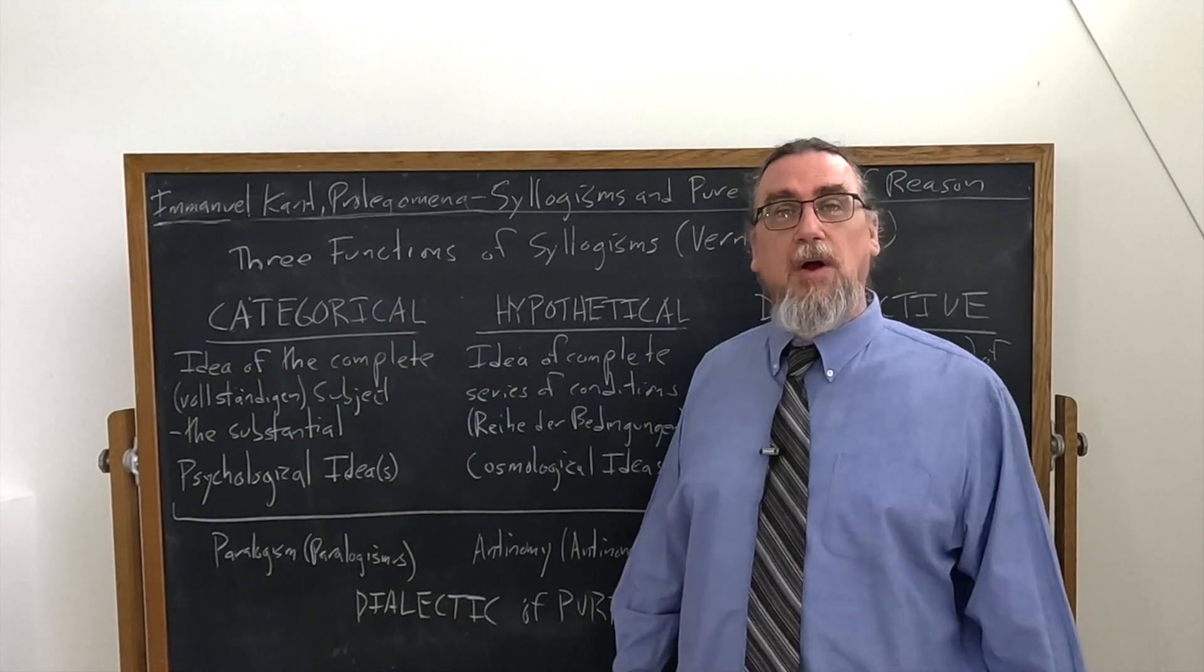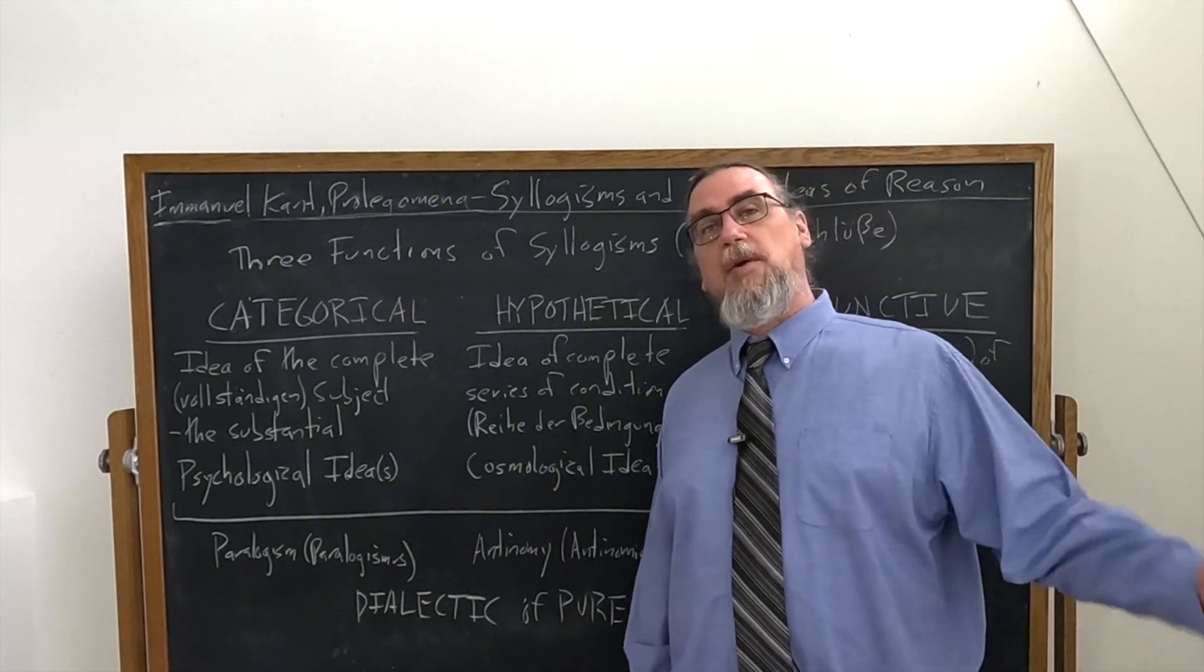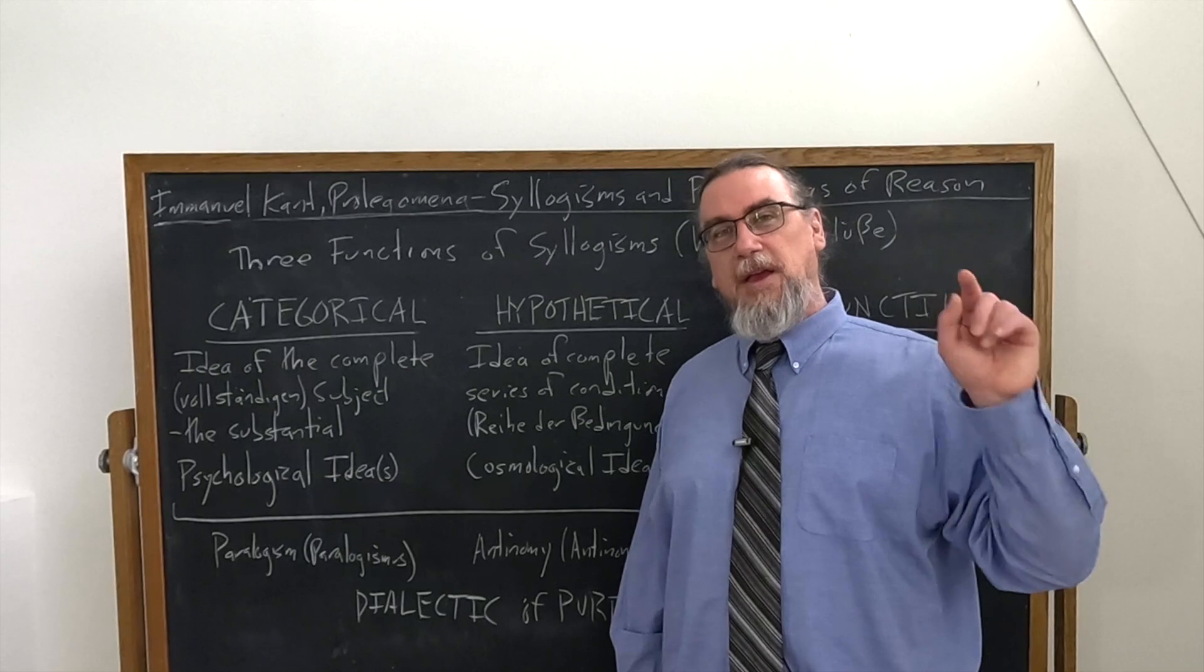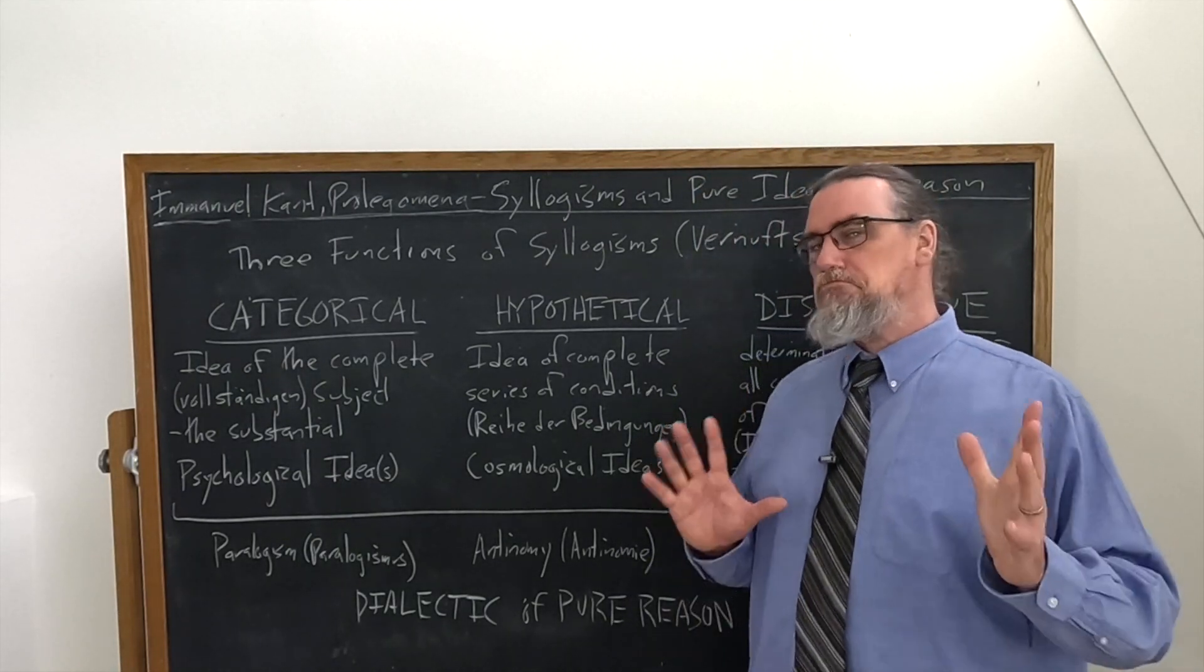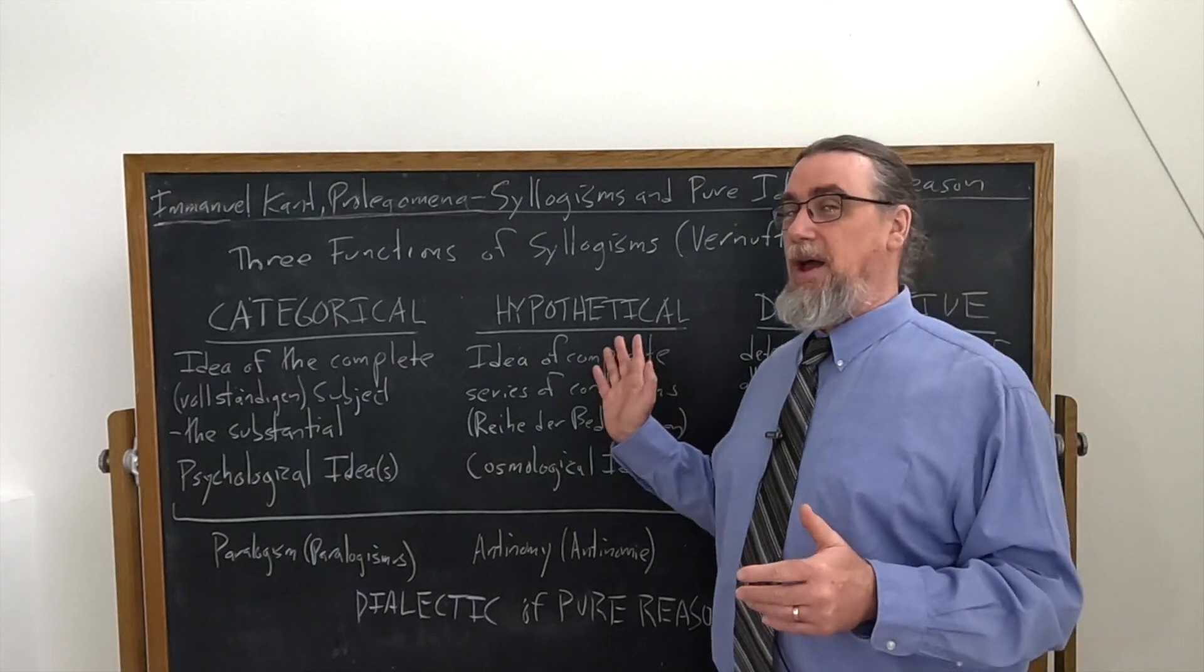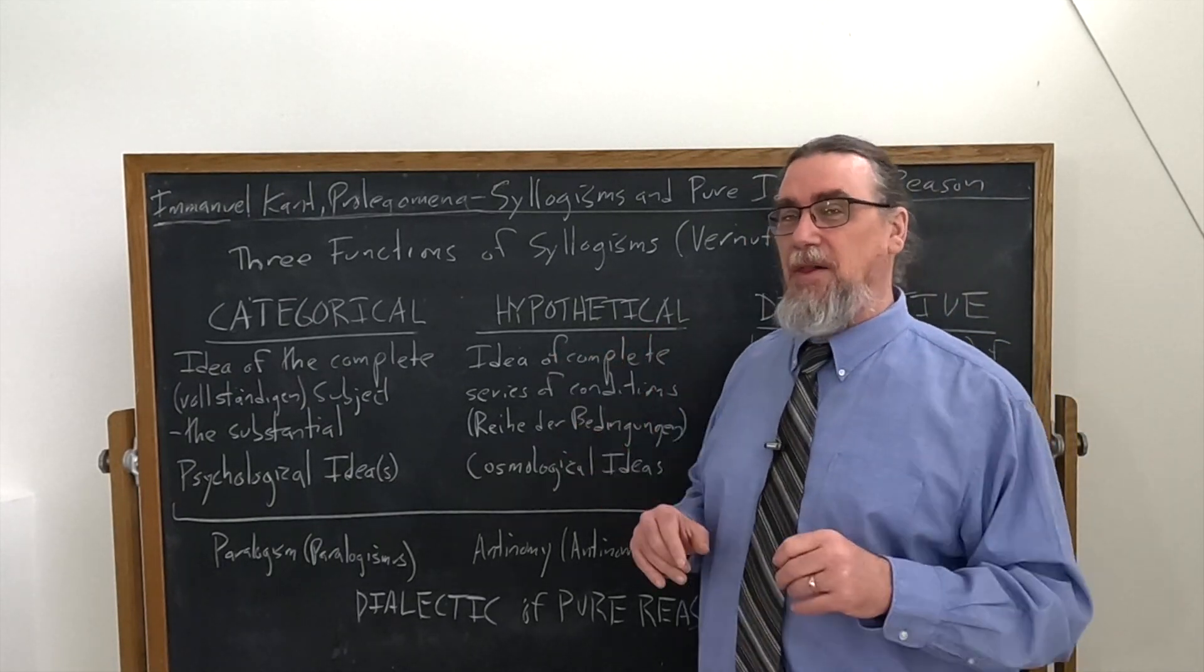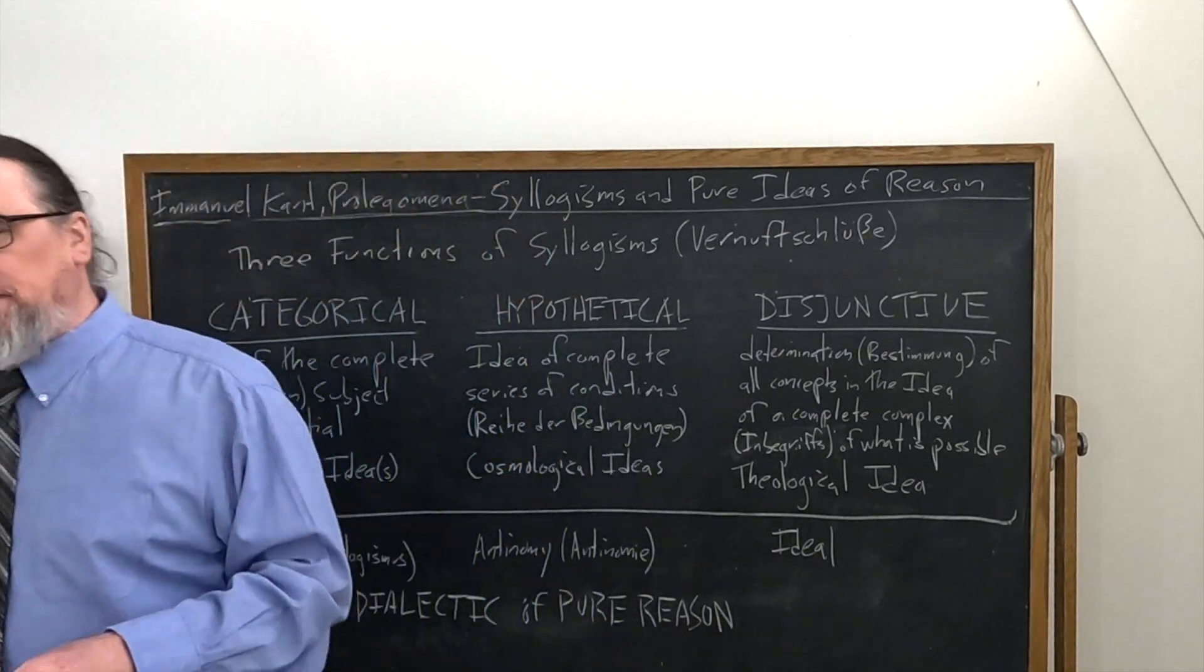We can also have invalid hypothetical syllogisms as well. And same thing with categorical syllogisms. So affirming the consequent: if P, then Q; Q, therefore P. It's certainly a hypothetical syllogism, but not a valid one. Kant's not worried about validity at this point.